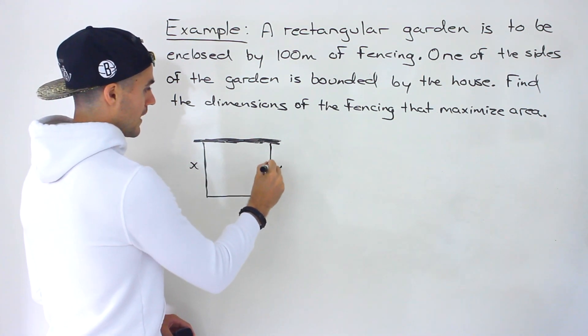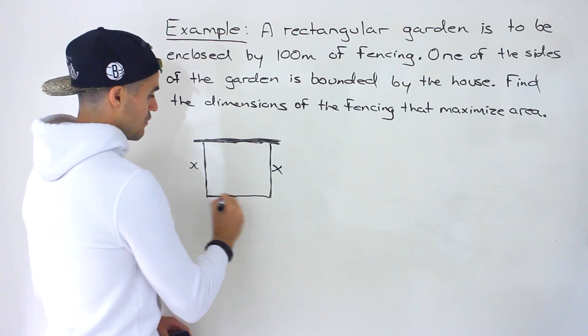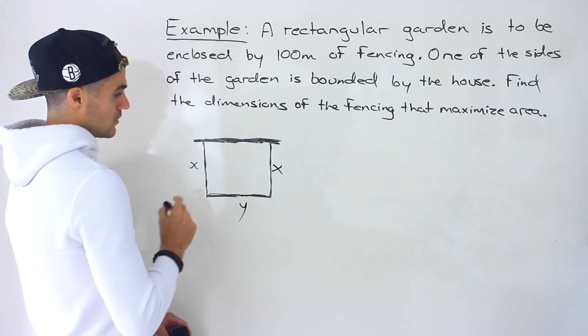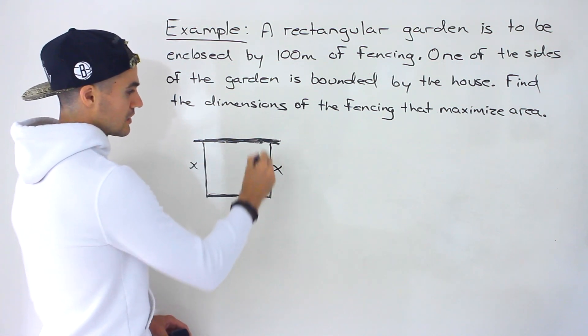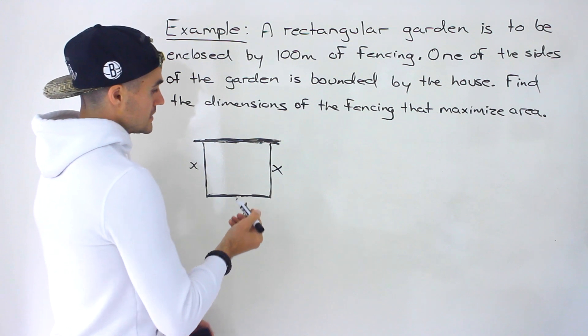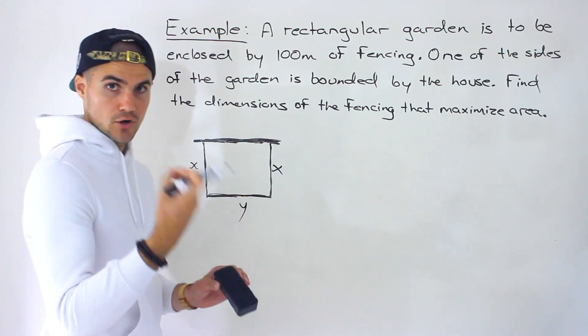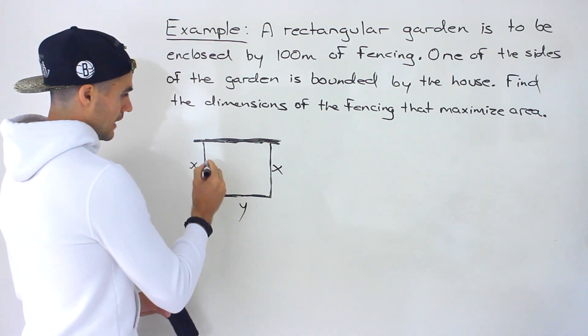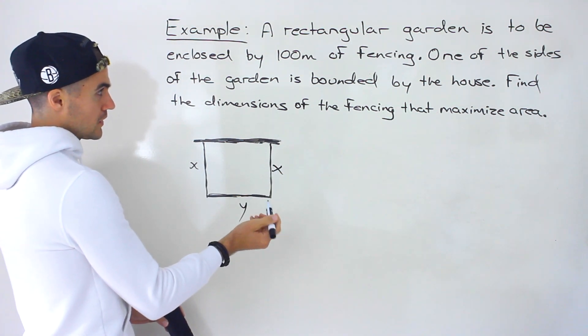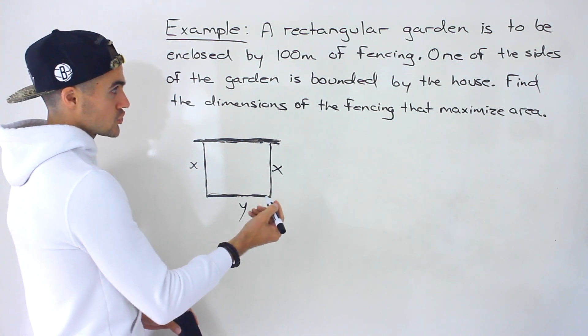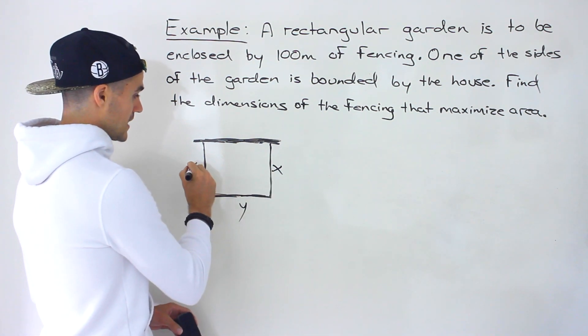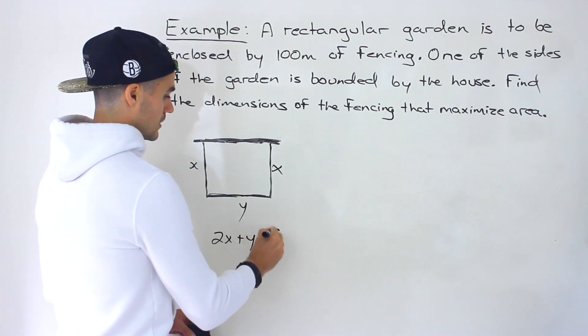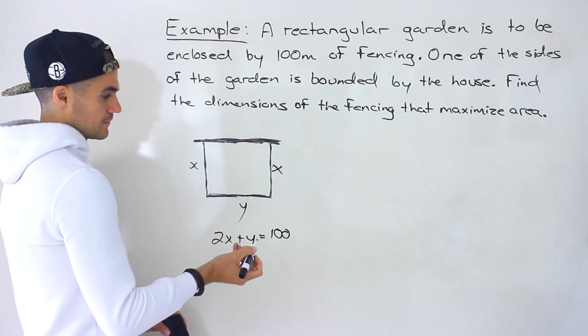So let's introduce some variables. We'll go X and X and then this side is going to have a certain length. Let's say it is Y over here. So this is the only fencing that is going on. So we're told that we have 100 meters of fencing. So that's what we're constrained to. That's our constraint. And so with these variables that we introduce here, we can create an equation for that 100 meters. So it's basically going to be X plus X plus Y. So 2X plus Y is going to equal 100 like that.